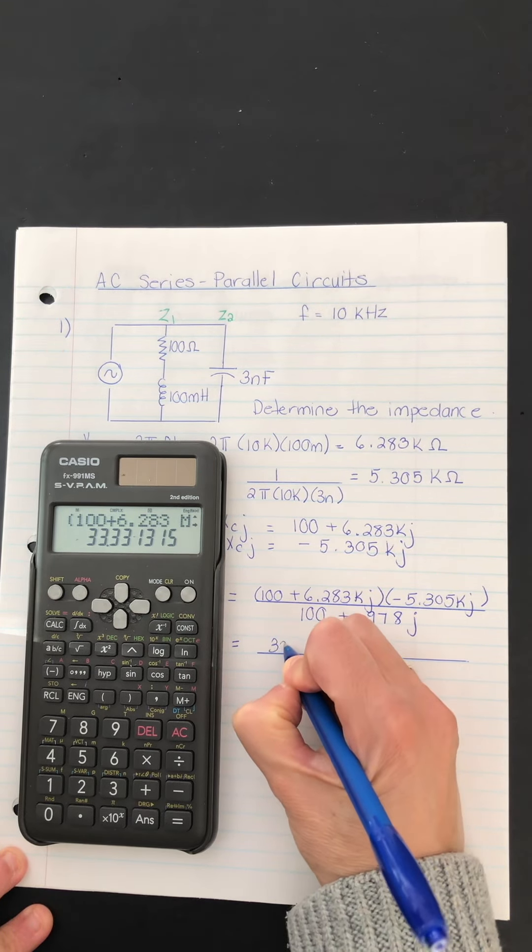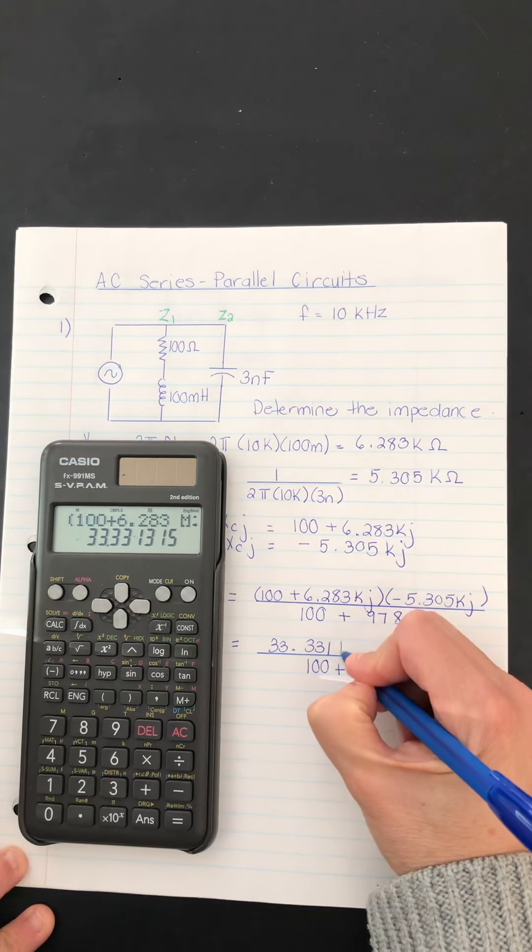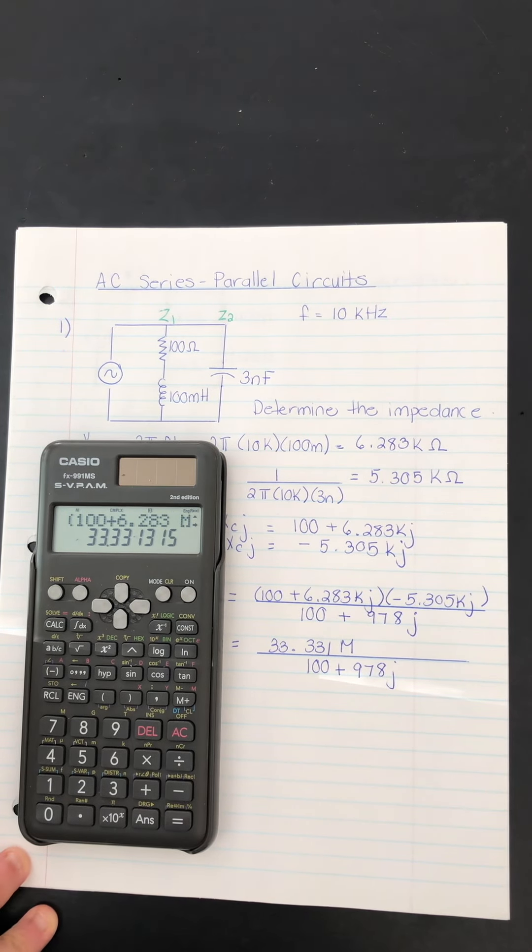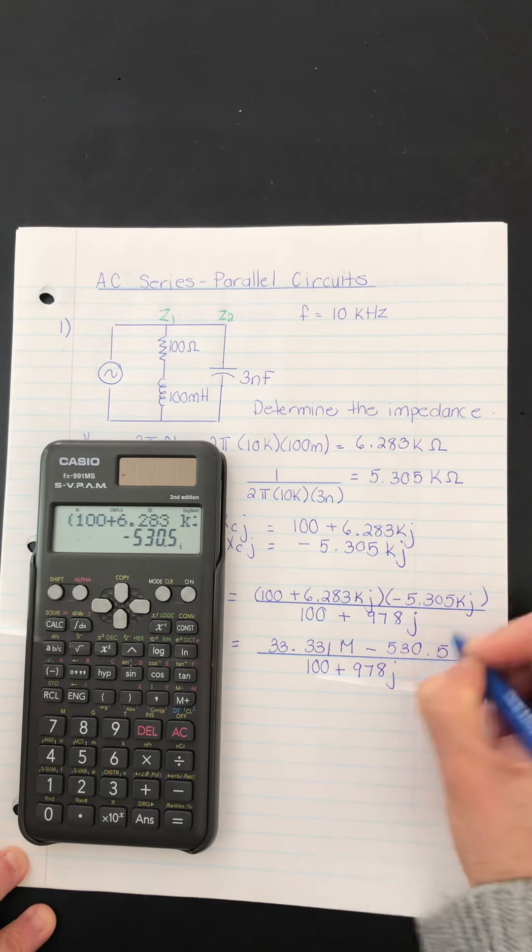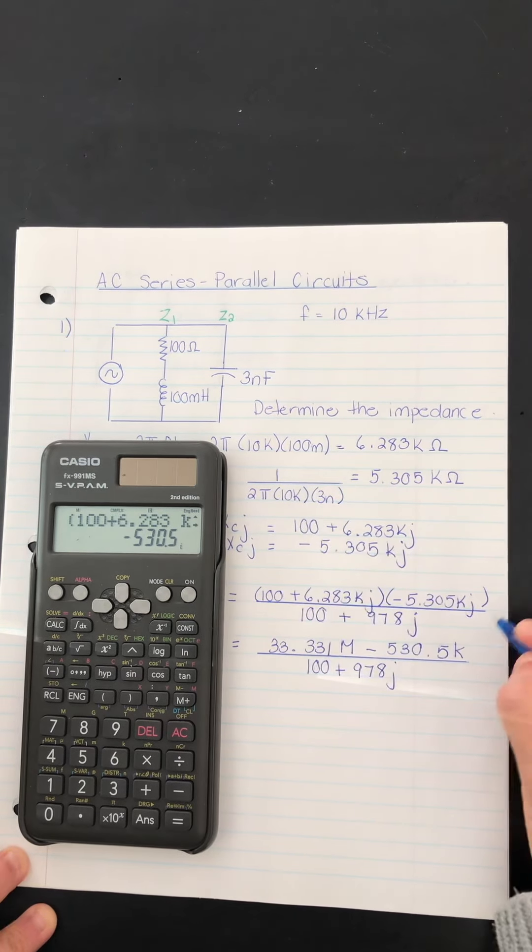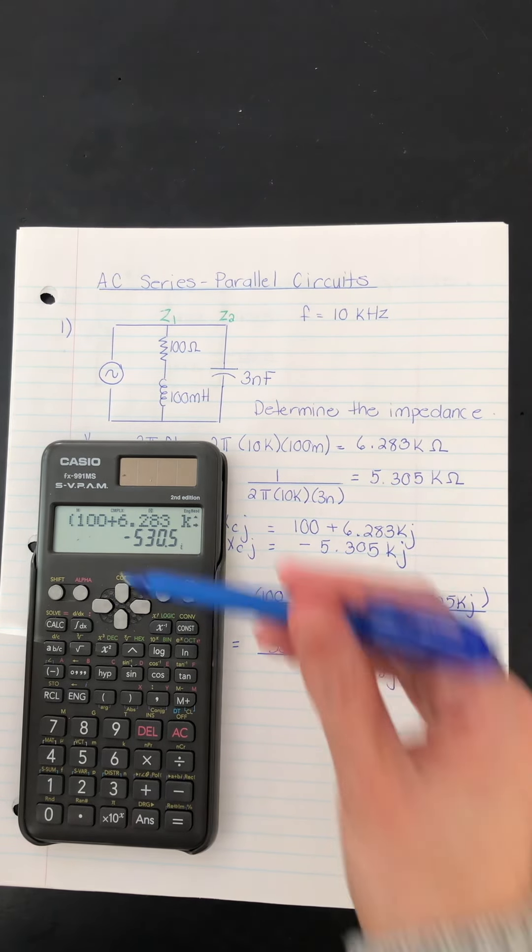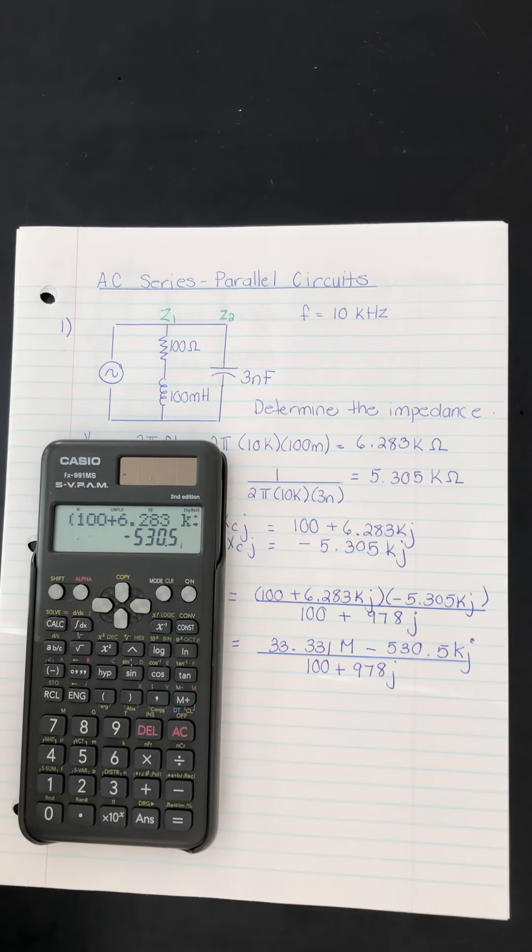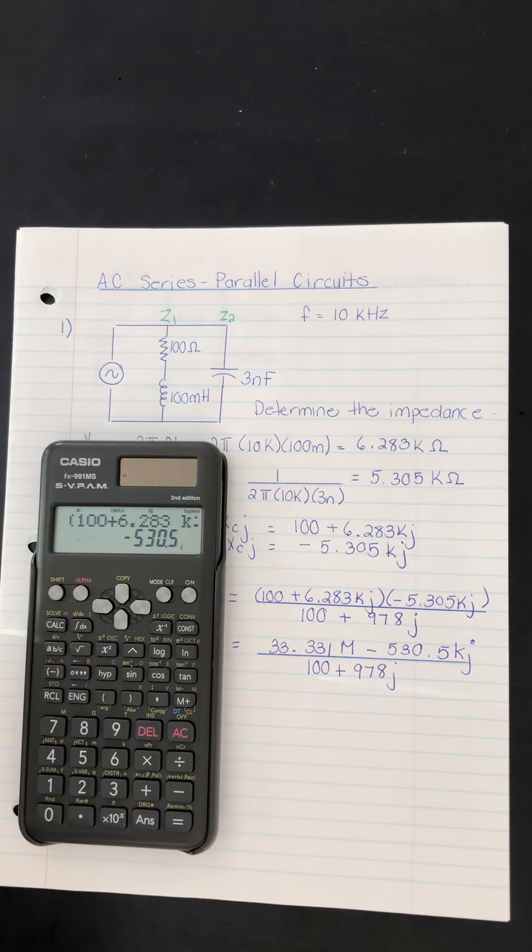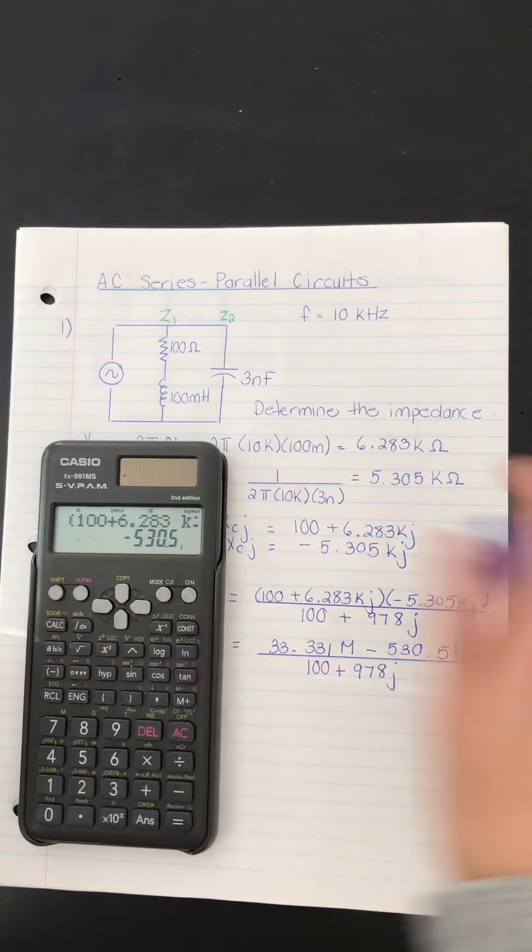This is the numerator. This is the real part of the number, 33.331. But look, it's mega. And then for the imaginary part, shift and equals negative 5.305 kilo. And it has that J. So that's the multiplication in the numerator. So using the calculator is saving us from doing that first outside inside last that we did whenever we multiplied two numbers in rectangular form.